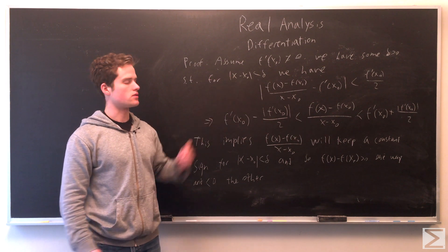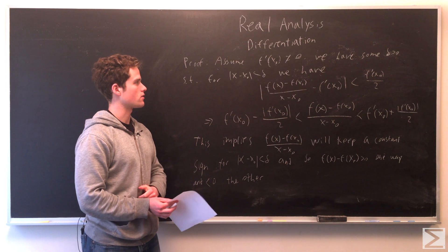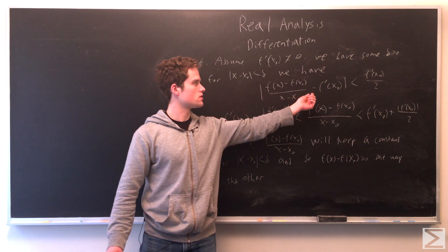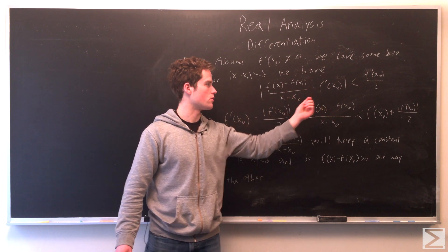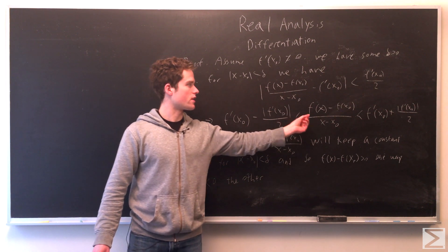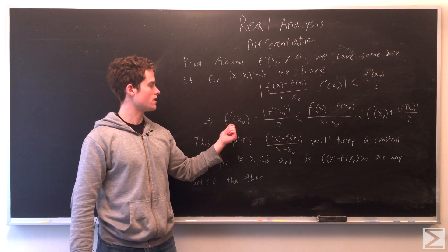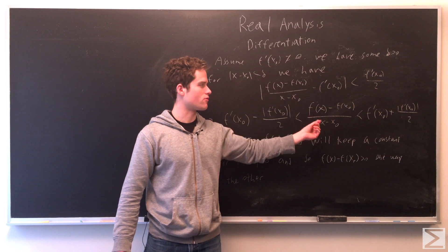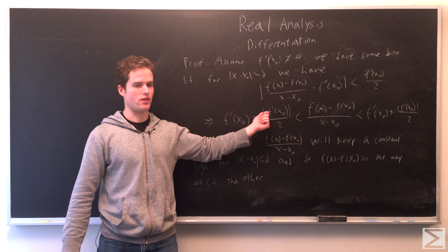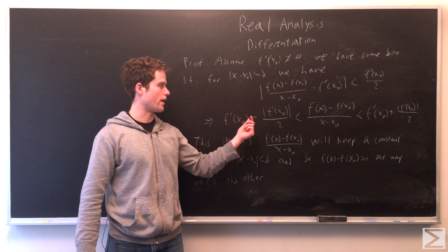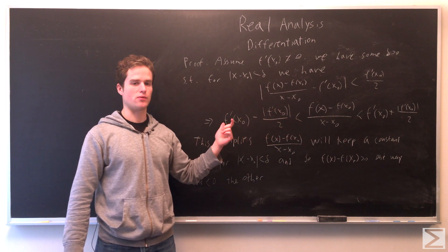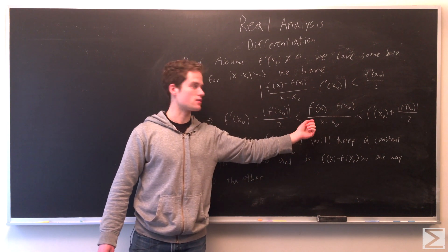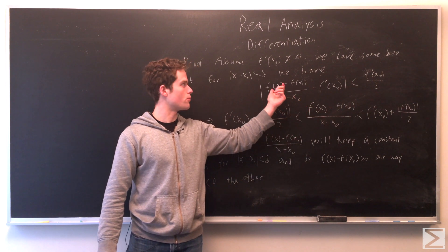If we assume f prime of x₀ does not equal zero, then there is some δ greater than zero such that for |x minus x₀| less than δ, the quantity f(x) minus f(x₀) over x minus x₀ approaches f prime(x₀) with the absolute value of their difference less than |f prime(x₀)| over 2. This implies f(x) minus f(x₀) over x minus x₀ is between f prime(x₀) minus |f prime(x₀)|/2 and f prime(x₀) plus |f prime(x₀)|/2, meaning this fraction has a constant sign in the open set around x₀, regardless of whether f prime(x₀) is positive or negative.